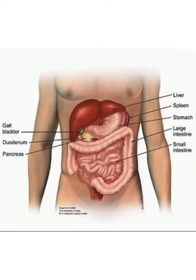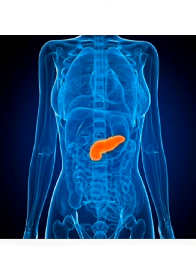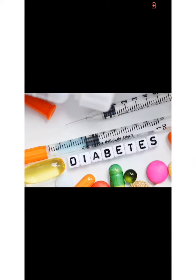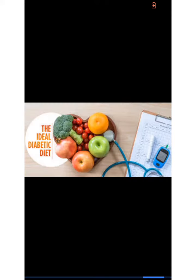Inside our body there's an organ located behind our stomach called the pancreas. Our pancreas's duty is to release insulin to help our body store and use the sugar and fat from the foods we eat. Now, when our body fails to produce enough insulin, or no insulin at all, this causes the glucose to stay in our blood.